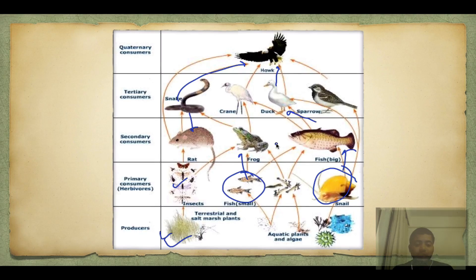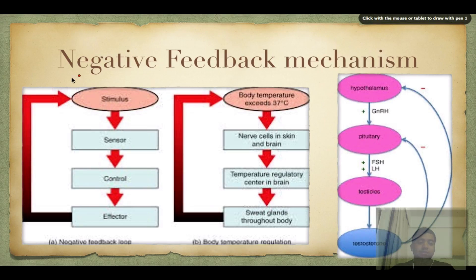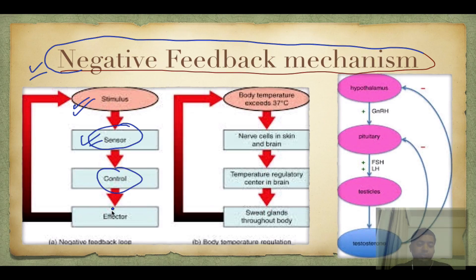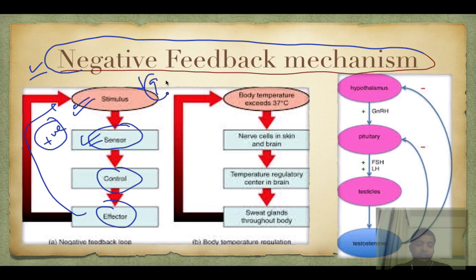Now I want you to know the concept of negative feedback mechanism. Any stimulus is provided and it is sensed by a sensor which controls it by a factor. A factor gives a positive stimulus if something is decreasing, and a negative stimulus if something is increasing and going out of proportion. For example, if your body temperature reaches 41 degrees due to a heat stroke — temperature increased.